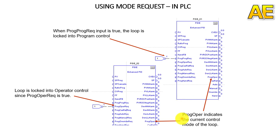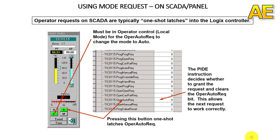This is totally similar for cascade, ratio, auto, manual, hand, and override mode requests. For using mode requests on a SCADA or panel, operator requests are typically one-shot latched into the logic controller. If the operator wants to change to auto mode and make the auto request set to 1, the operator needs to click on operator mode (local mode) with the button named L, then click button A to change it to auto mode.